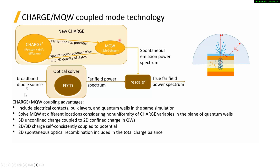In FDTD we inject the dipole, run FDTD, and calculate the far field power spectrum. The output of FDTD combined with the spontaneous emission power spectrum allows us to calculate the true far field power spectrum. In this video, we focus just on FDTD — using dipole power to calculate the far field power spectrum.